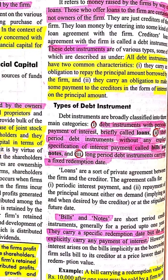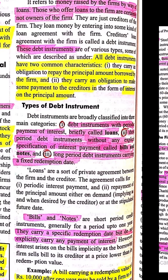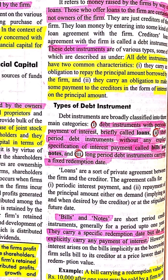Ab debt instruments teen hain. Pehla hai loan, doosra hai bills and notes, teesra hai bonds and debentures. Loan mein periodic interest payment hoti hai aur repayment of principal amount either on demand or at the stipulated future date. Loan mein kya hota hai ki periodic interest payment di jaati hai aur kisi nirdharit bhaavi tithi par principal amount bhi pay kar diya jaata hai.